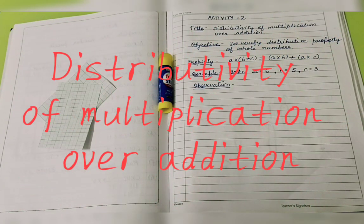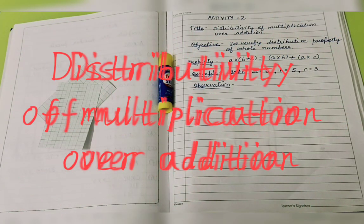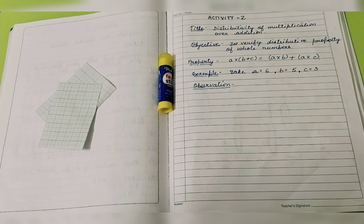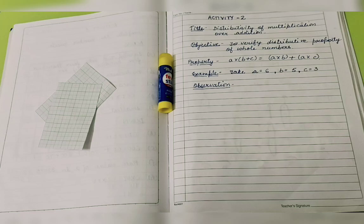Hello students, today we're going to start our second math slab activity that is based on a property. The name of the property is distributive property based on whole numbers, and we're going to learn this property through our activity.